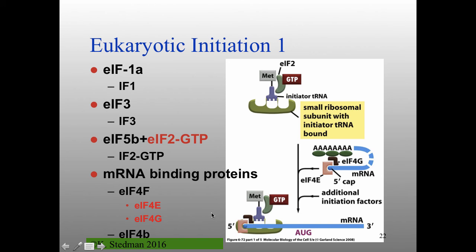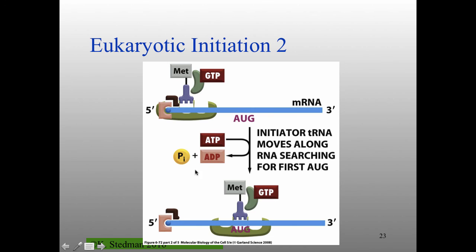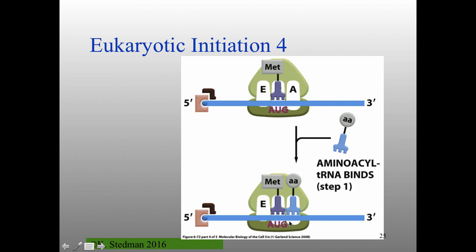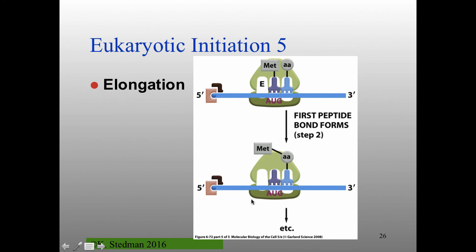The small subunit with the initiator tRNA translocates — i.e., moves along the messenger RNA until you get to the start codon. This requires ATP hydrolysis as it moves along. Once it gets to the right place, you have GTP hydrolysis, a change in the structure of initiation factor 2, EIF1 and EIF3 come off, now you have the large subunit and you're ready to go. You've got an aminoacyl tRNA in the P site, a free A site, your next aminoacyl tRNA comes in and binds, transpeptidation takes place, and then the ribosome will move.